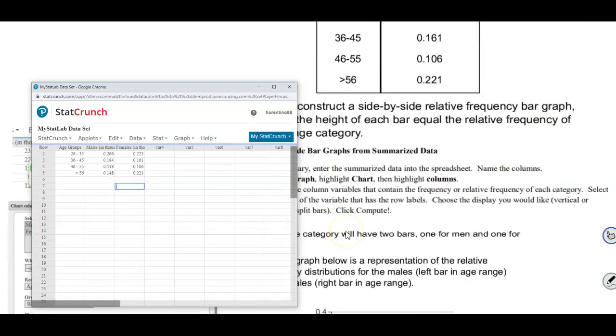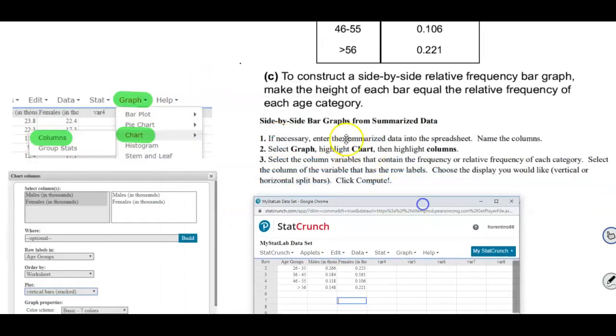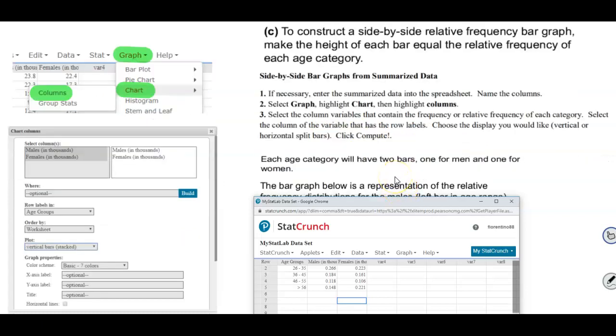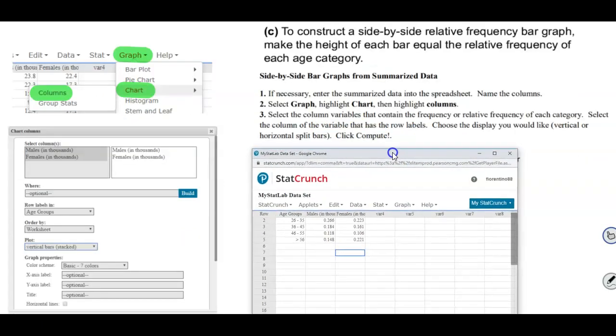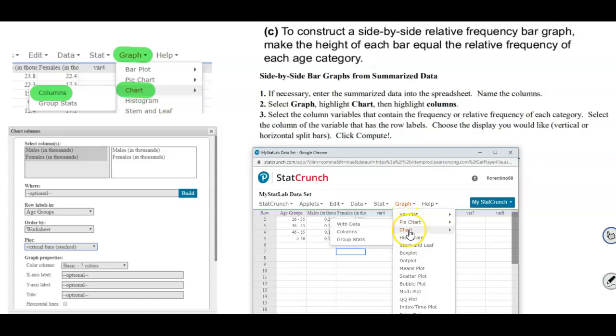So now that we've done that, we're going to create a side-by-side bar graph from the summarized data. In order to do that we're going to go to graph and then down below go to chart and then select columns.